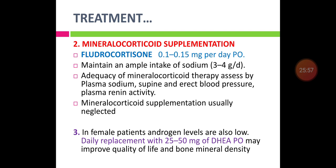Mineralocorticoid supplementation includes fludrocortisone at a dose of 0.1–0.15 mg (100–150 micrograms) per day orally, along with ample sodium intake. Adequacy of mineralocorticoid therapy is assessed by plasma sodium level, postural blood pressure (supine and erect), and plasma renin activity. For those with androgen deficiency, especially female patients, daily replacement of 25–50 mg of dehydroepiandrosterone (DHEA) orally will improve quality of life and increase bone mineral density.